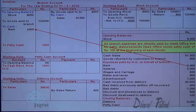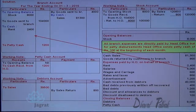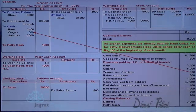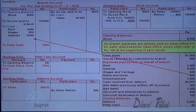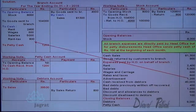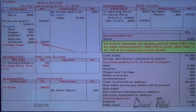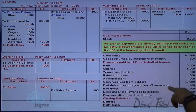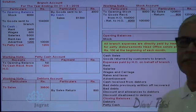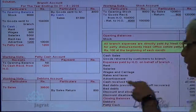Goods returned by customers to the branch are recorded as sales returns — deducted from sales in the stock account and also recorded in the debtors account. Expenses paid by head office on behalf of branch — branch account debit to cash account — including cash paid for rent, salary, wages, rent and taxes, and advertisement — branch account debit to cash account totalling 10,000 other expenses.